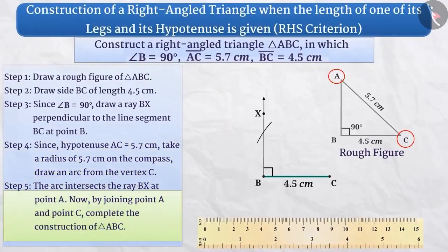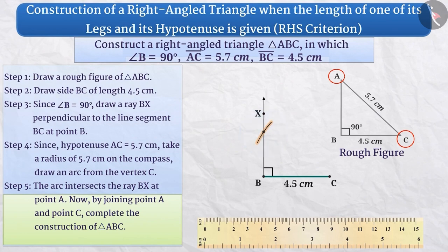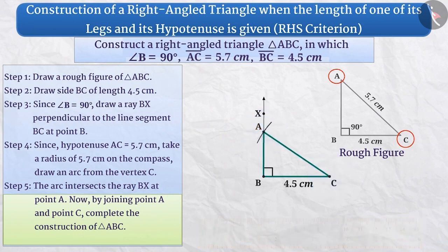Step 5. The arc intersects the ray BX at a point. The point of intersection is the point A. Therefore, now we will join the vertex A and the vertex C from which we will get side AC of triangle ABC.